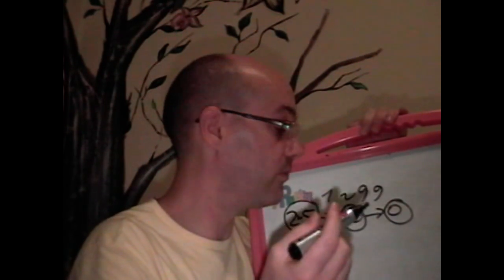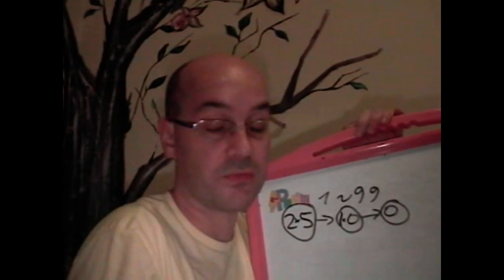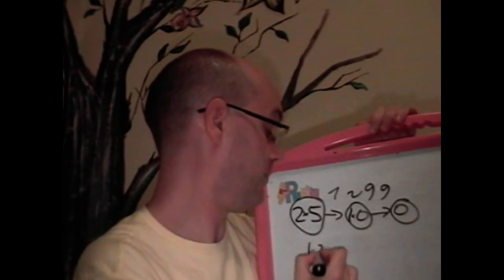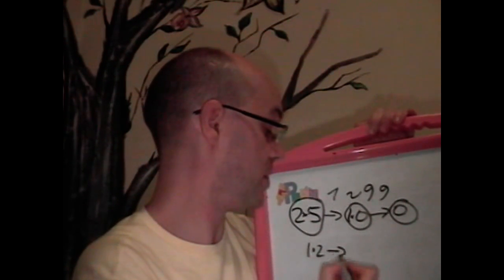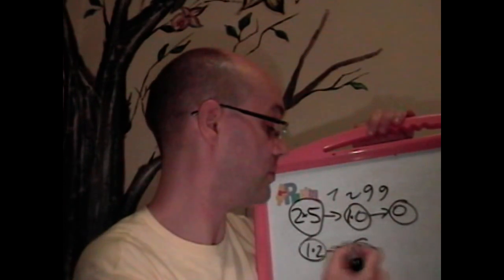One digit numbers make chains that the length is 1, of course. Two digit numbers, well, can be maybe, let's say 12, makes a chain that is 2. The length is 2.